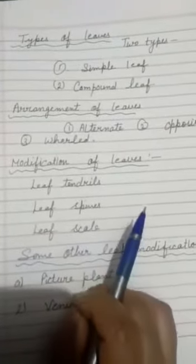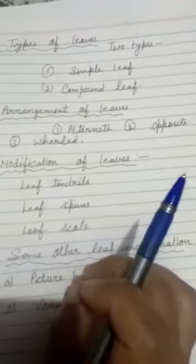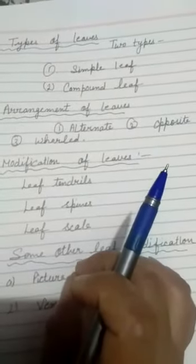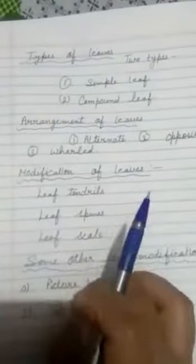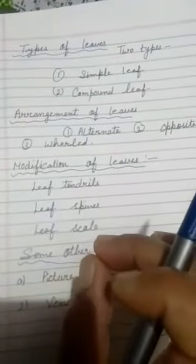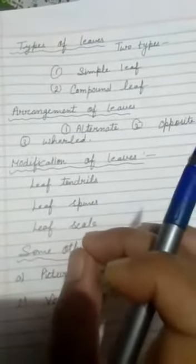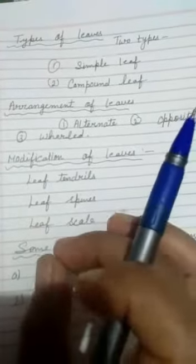The next is leaf scale. Leaves in some plants are modified into scale leaves for the purposes of storing food and water. They may be as thin and dry as the ginger or thick and fleshy as in the onion.